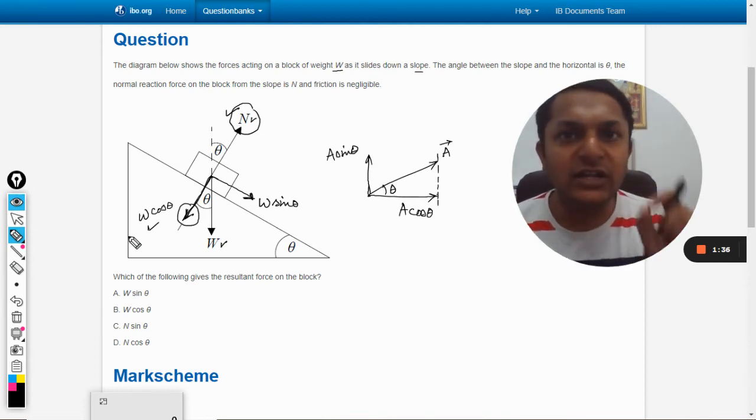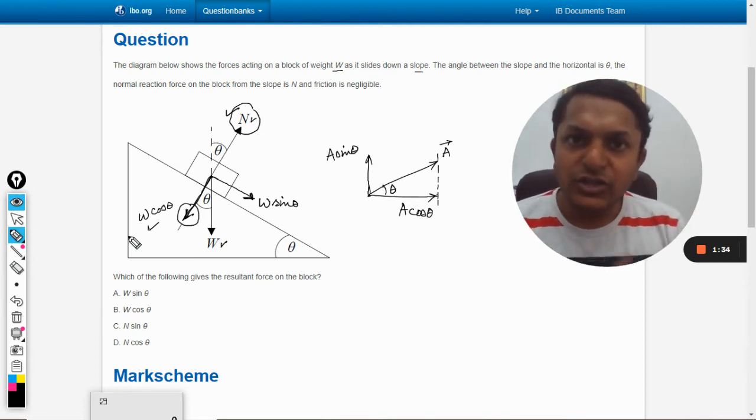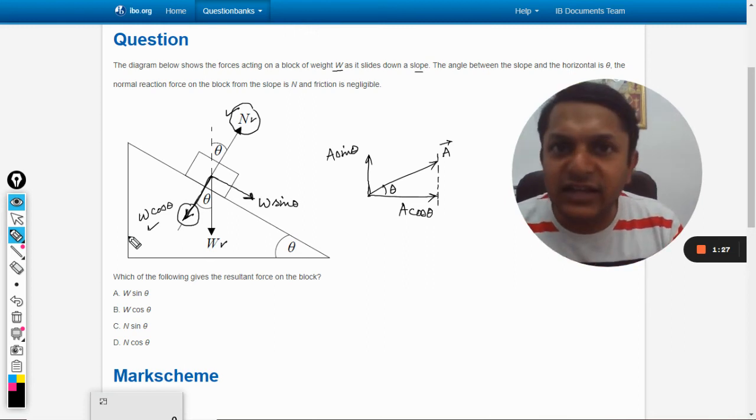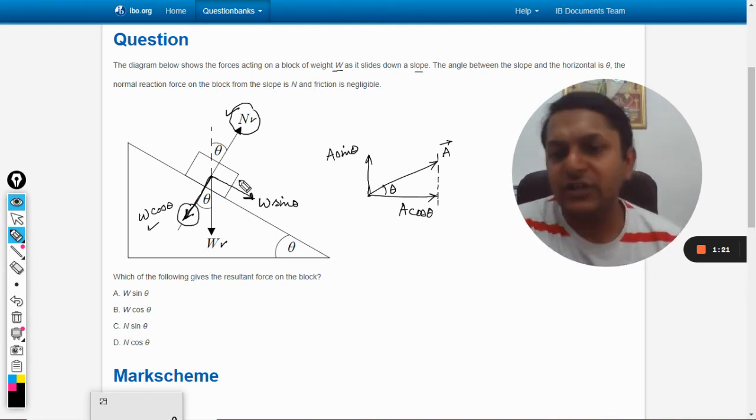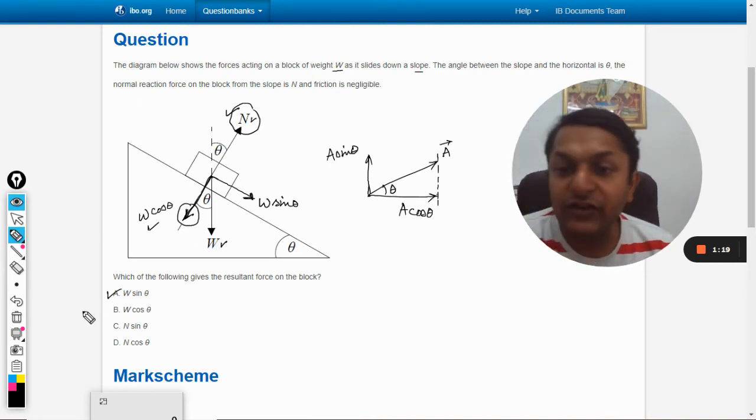Now what are we left with? We are left only with W sin theta. So W sin theta is the only force which is now acting on the body. So we can say that the resultant force on the body will be W sin theta because that is the only force left. So our answer should definitely be A.